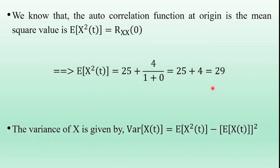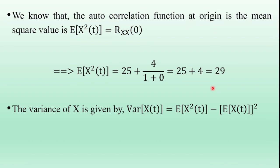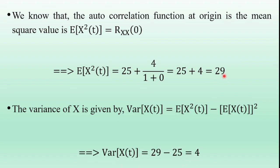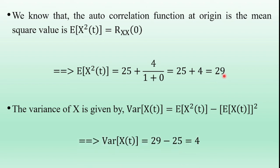Now calculate the variance of the random process. Variance of x(t) = E[x²(t)] - (E[x(t)])². Here E[x²(t)] = 29 and E[x(t)] = 5, so (E[x(t)])² = 25. Therefore variance = 29 - 25 = 4. So the variance of the random process x(t) is 4.